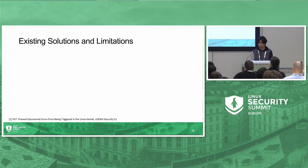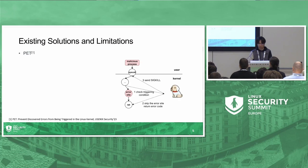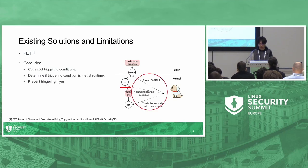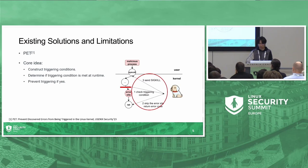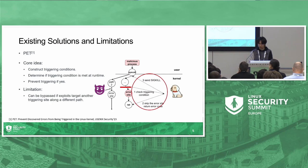Some state-of-the-art works do provide on-the-fly protection. One notable example is PET, presented at USENIX Security '23. PET prevents discovered bugs from being triggered in the Linux kernel. Given a bug report, it first constructs triggering conditions offline, then at runtime checks if the triggering condition is met and prevents triggering and exploitation attempts. However, this approach is limited — it only prevents triggering in the specific context manifested in the bug report. If an attacker changes their method of triggering a bug, such as along a different type or different site, this protection may fail to function.